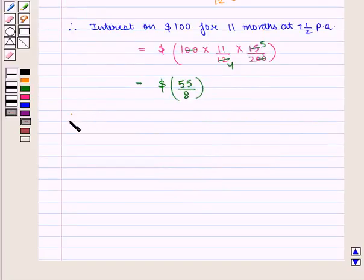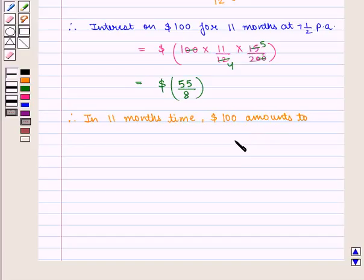Therefore, in 11 months time, $100 amounts to $100 plus 55/8 dollars.